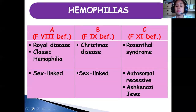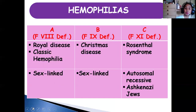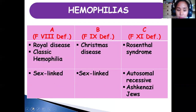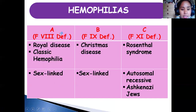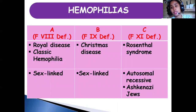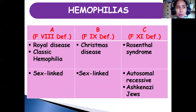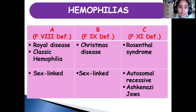We have three types of hemophilia: A, B, and C — corresponding to factors 8, 9, and 11. Hemophilia A, also called classic hemophilia or royal disease, can range from mild to severe. It is called royal disease because it runs in the royal family due to consanguinity — intermarriage among family members.